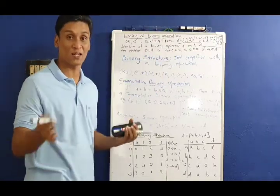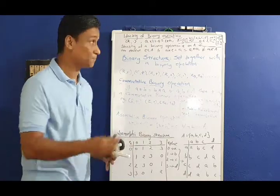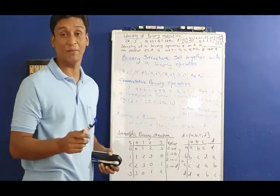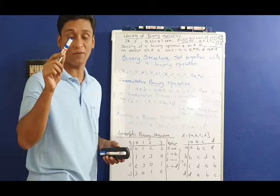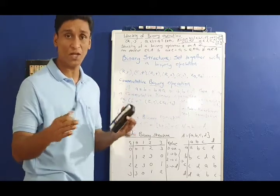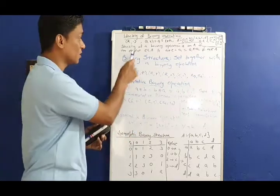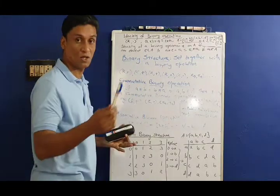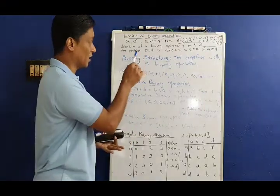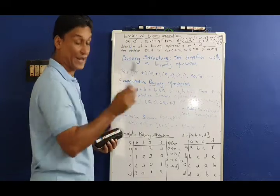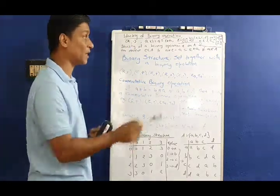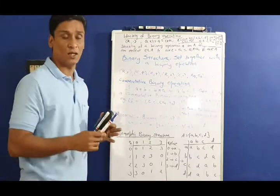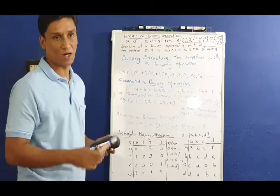If you have a 2 by 2 matrix under additional binary operation, you have the zero matrix as identity. If you have a 3 by 3 matrix, you again have the zero matrix as identity. In general, the identity of a binary operation star on set A is an element e in A such that a star e equals a equals e star a for all a in A.